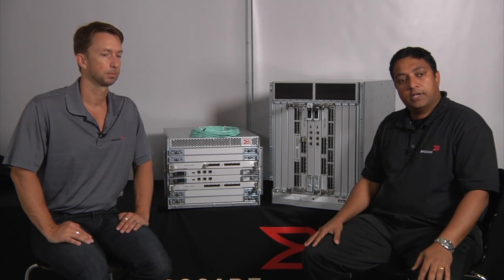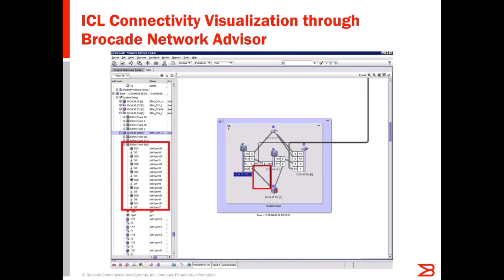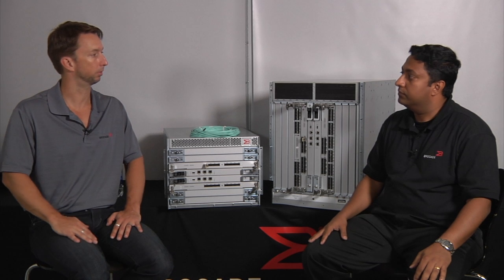For customers managing with Network Advisor, a screenshot shows the connection between two chassis with inter-chassis links — about eight connections displayed graphically. The details panel is on the left-hand side and the graphical depiction shows the two chassis with ICL connections between them. It's very easy to monitor, view, and configure these ICLs through Network Advisor.